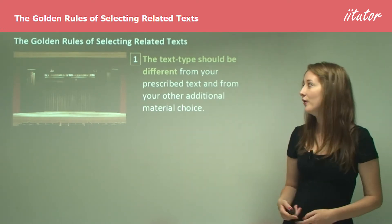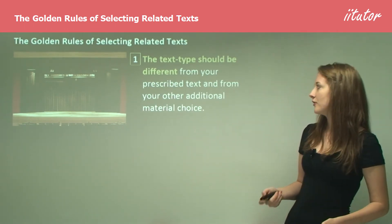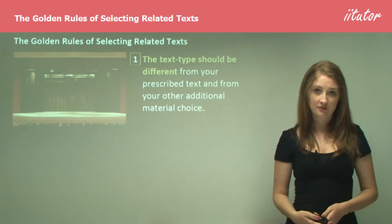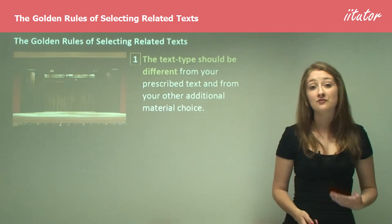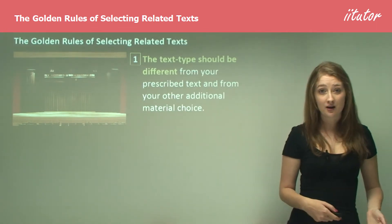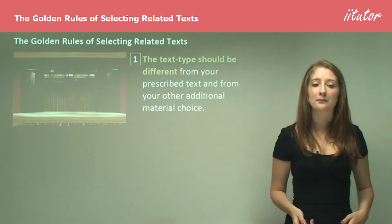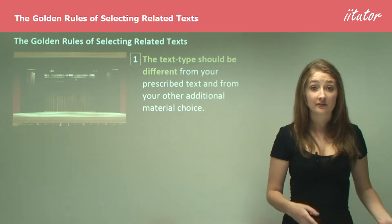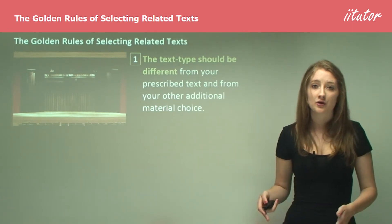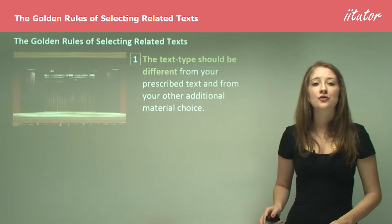The first rule is that the text type should be different from your prescribed text and from your other additional material choice. This is going to provide you with variation and really make sure that you demonstrate to the marker that you have a solid view across text types. For example, if your text in class is a Shakespearean play, you're not going to choose another one for your related text — you might choose a short story and a movie.